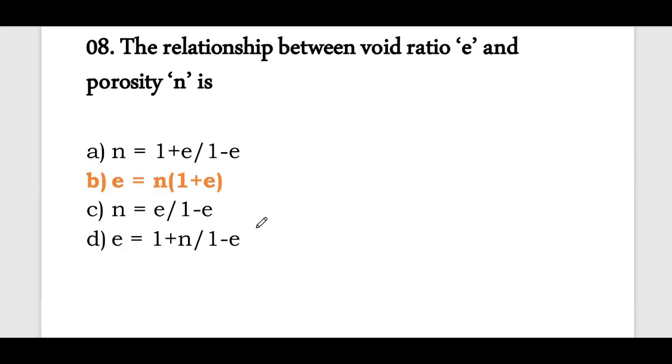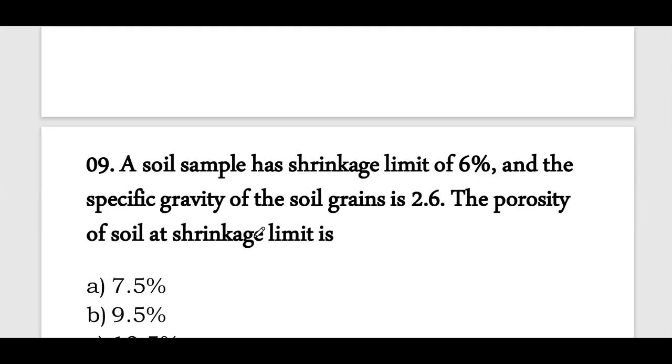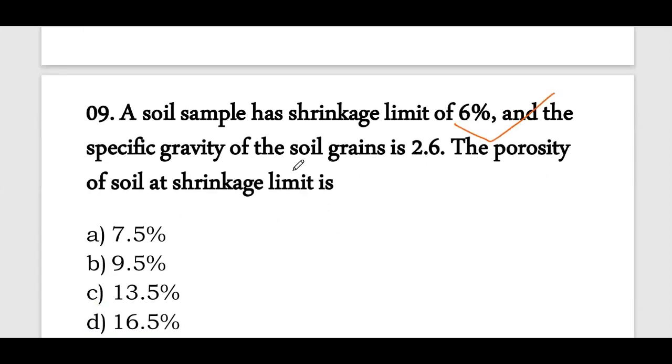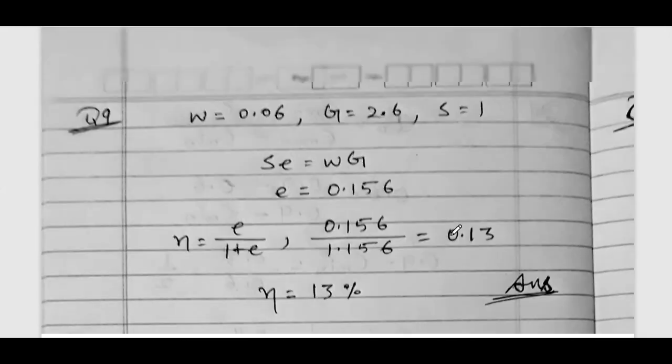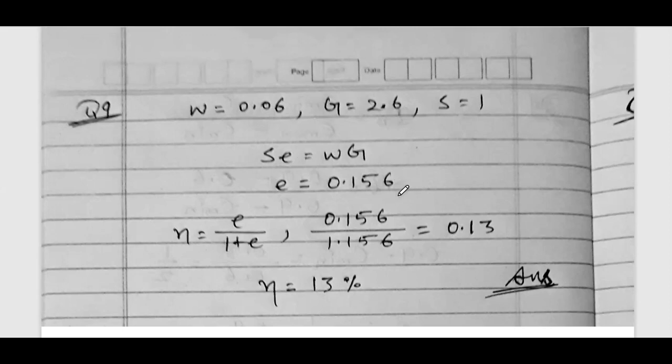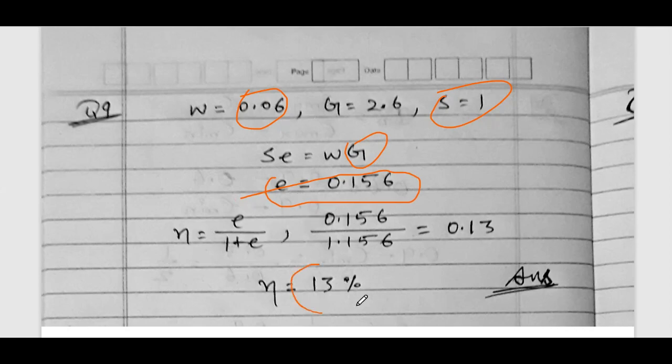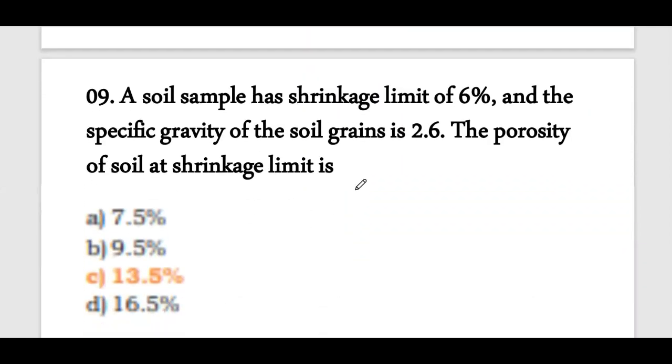The porosity value is 0.35 or 35 percent. Volume of voids equals volume of water, so volume of water will be 35 percent times 3, which equals 1.05 meter cube. Question number 8: The relationship between void ratio and porosity - option B is the correct answer. The relationship is n equals e/(1+e) and e equals n/(1-n).